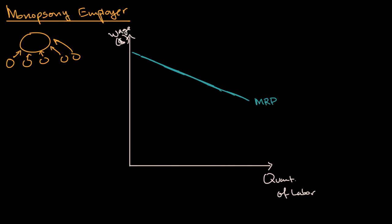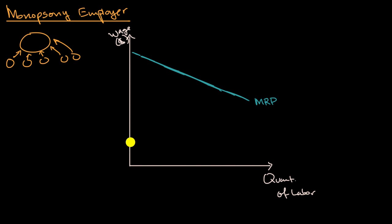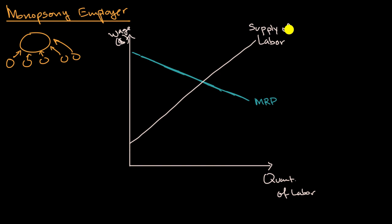We can think about the marginal factor cost. If this were not a monopsony employer, the marginal factor cost would just be the market wage rate. But this is not an employer in a perfectly competitive labor market — they're the only employer in this small town, they're the big industry. And so they're going to have their own unique labor supply curve.